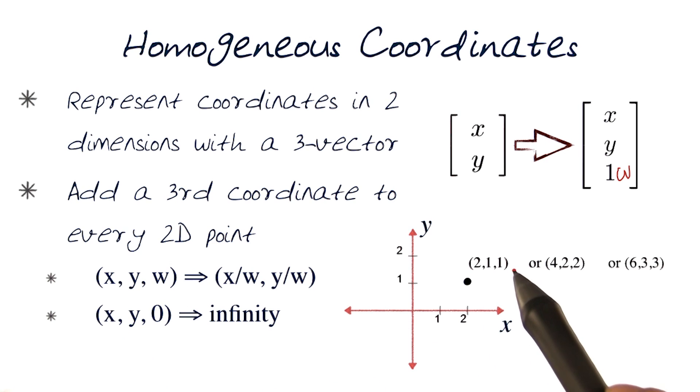One thing to note: w cannot be zero, because if you make this zero, x and y would go to infinity. When w is zero, we can refer to that as an infinite point.